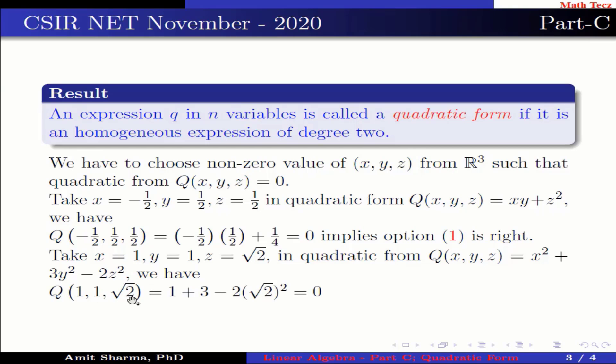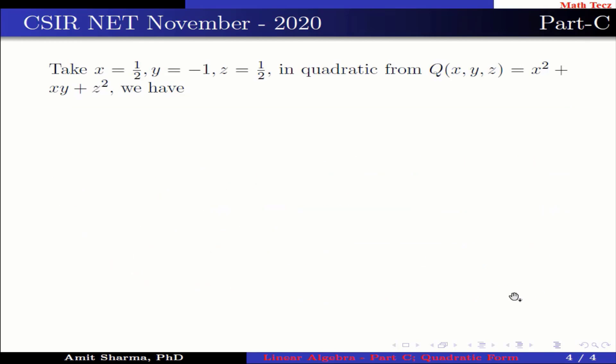Q(1/2, -1, 1/2) = 1/2 in quadratic form Q(x,y,z) = x² + xy + z². We have Q(1/2, -1, 1/2) = 0, which implies option 4 is right.